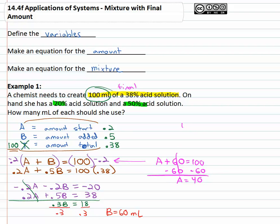So we've got forty of the A, twenty percent, forty milliliters at twenty percent.